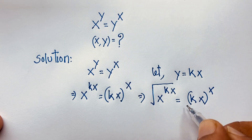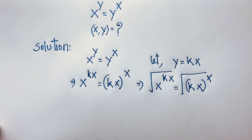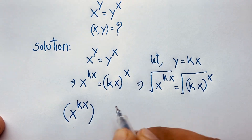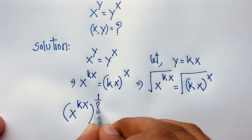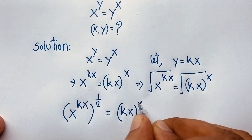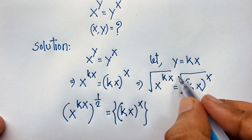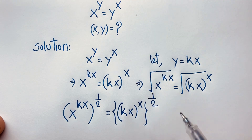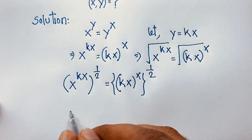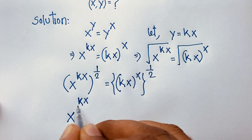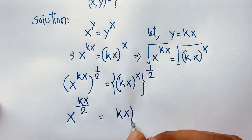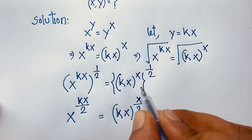Now I apply the square root to both sides — that is, raise both sides to the power 1/2. So x to the power kx, bracket, to the 1/2 is equal to kx, bracket, to the power x times 1/2, which gives x to the power kx over 2 is equal to kx bracket to the power x over 2.